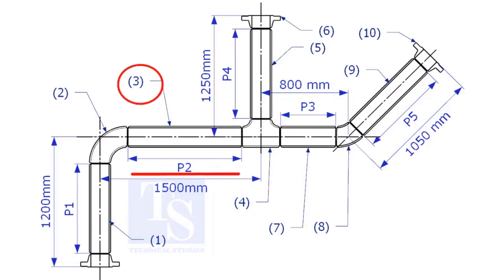Let us calculate the length of item number 3. We already know the takeoff length of the 6 inch long radius elbow. Now, check the chart for the takeoff length of the equal T.